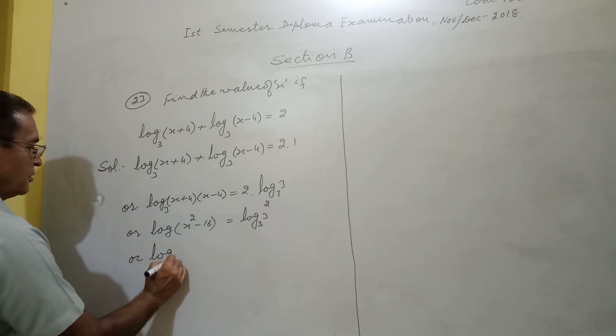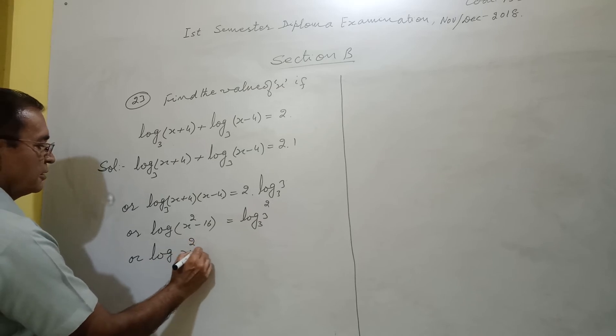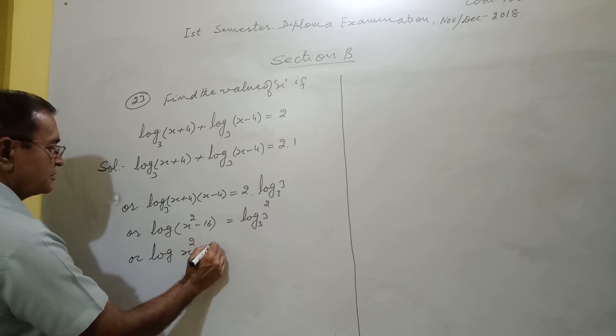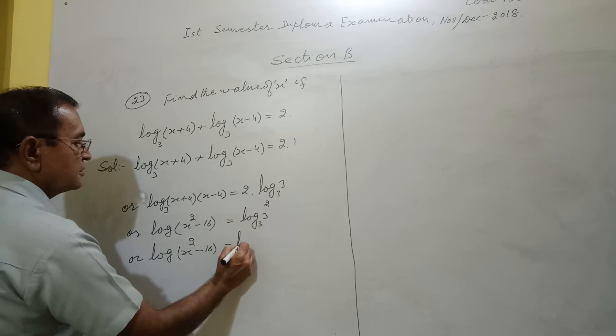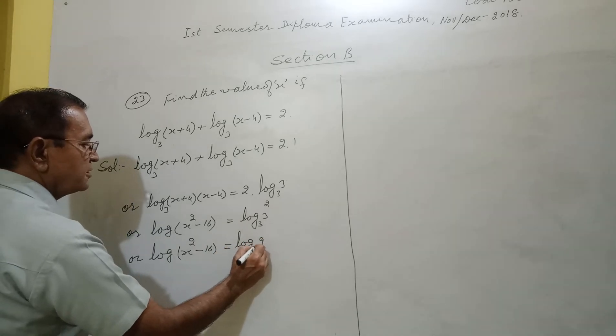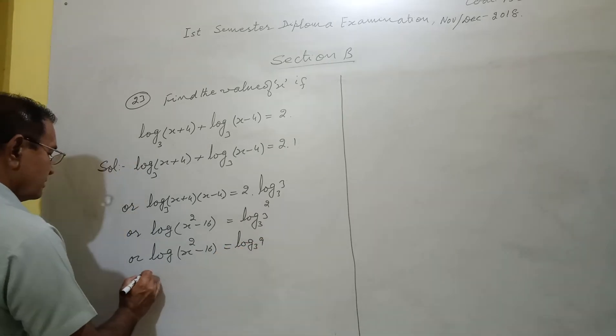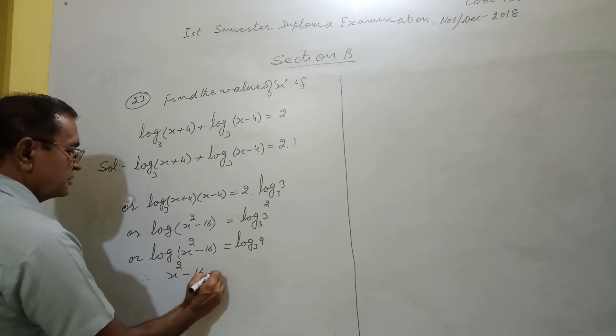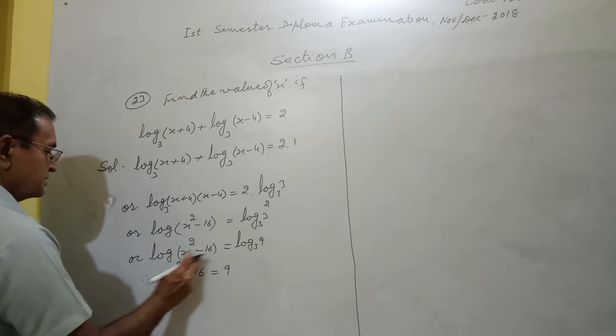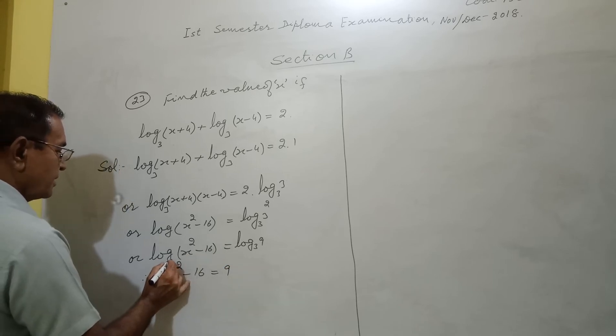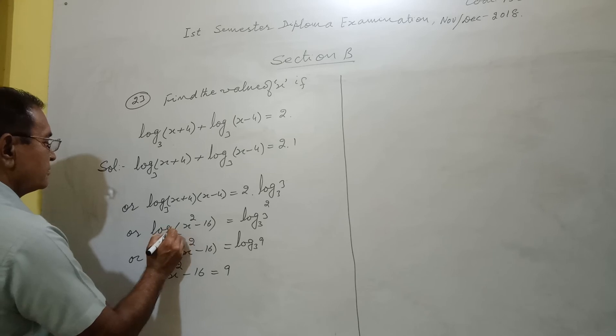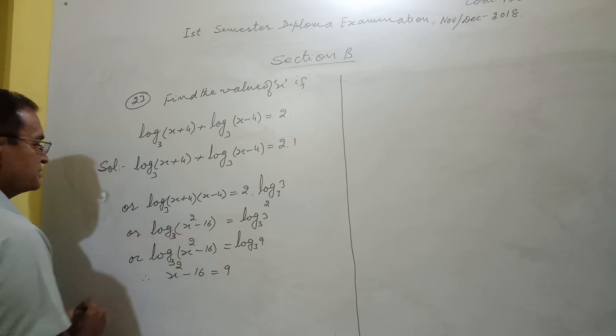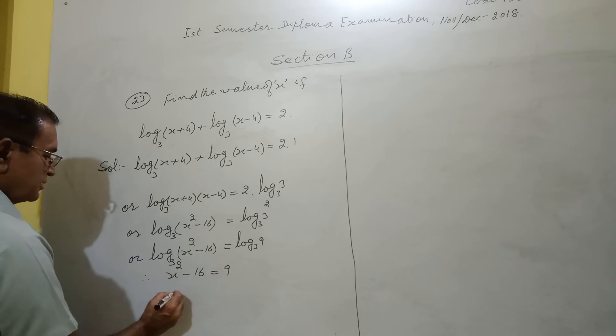Or log of x square minus 16 equals log of 9 base 3. So cancelling log log, therefore x square minus 16 equals 9 because bases are same. Base is 3, base is 3. So x square minus 16 equals 9.